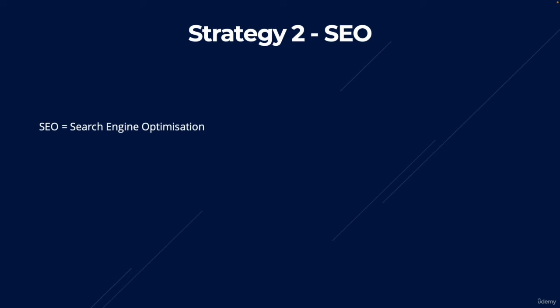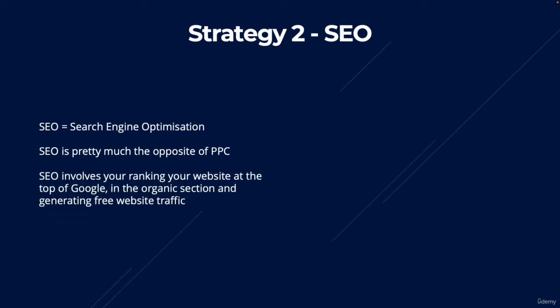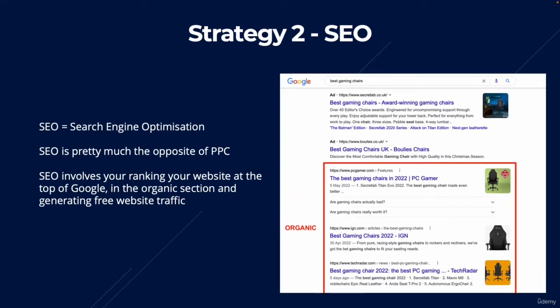Moving on to the second strategy, which is SEO — Search Engine Optimization. SEO is pretty much the opposite of PPC. It involves ranking your website at the top of Google in the organic section and generating free website traffic. The organic section is displayed right below the ads, and anytime you appear there, it doesn't matter whether you generate 100 or 1000 clicks a month — it's not going to cost you a thing.